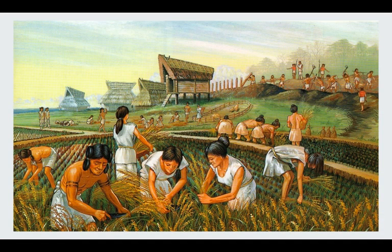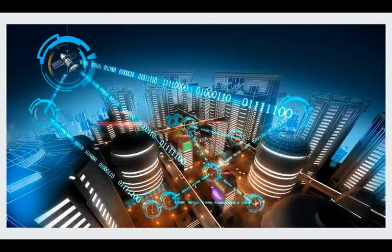Throughout history, humans' ability to communicate and work together has set us apart. Although we are limited to our five senses and the responses our muscles can carry out, these two endpoints work nearly flawlessly with the brain at lightning speeds. However, we were often restricted to communicating with those in close proximity to us. The rise of the Internet has allowed people to communicate more easily, even from across the world, allowing for substantial progress and advancements in society.